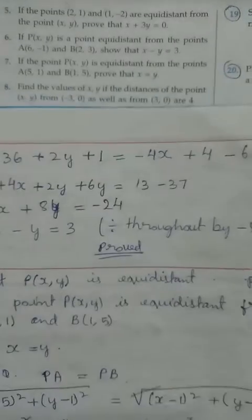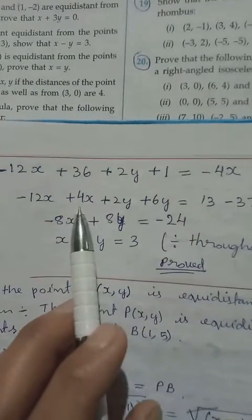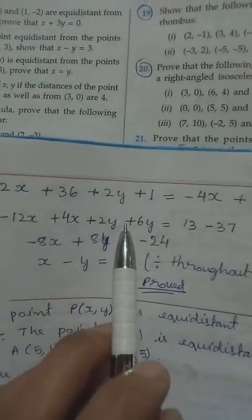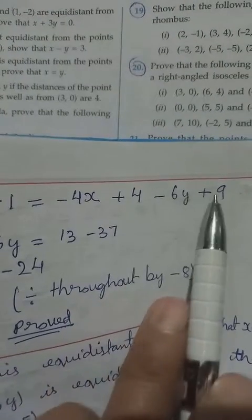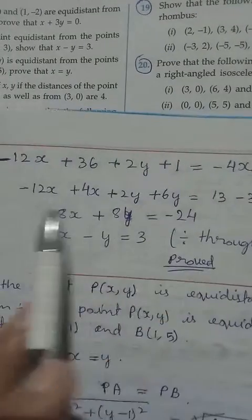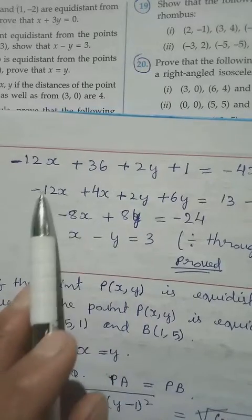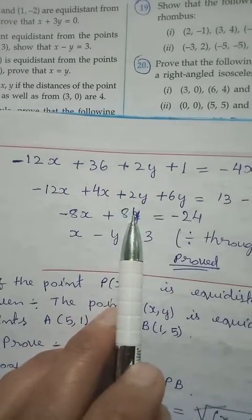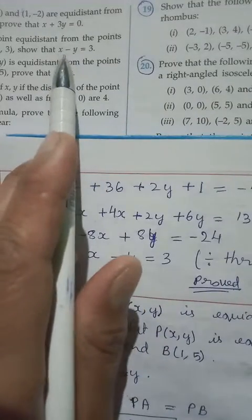Now let's group terms: bring x terms to one side and constants and y terms to the other side. We have minus 12x, bring minus 4x across it becomes plus 4x. We have plus 2y, bring minus 6y across it becomes plus 6y. Constants: 36 plus 1 gives 37, take to other side becomes minus 37; plus 4 plus 9 gives 13. Combining x terms: minus 12x plus 4x gives minus 8x. Combining y terms: 2y plus 6y gives 8y. Right side: 13 minus 37 gives minus 24.